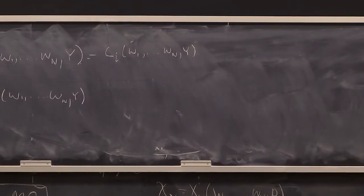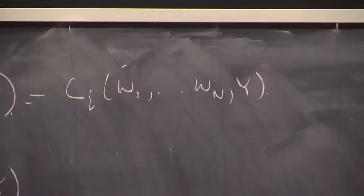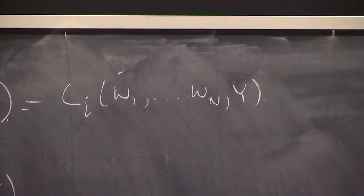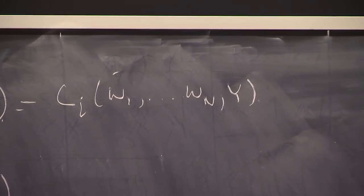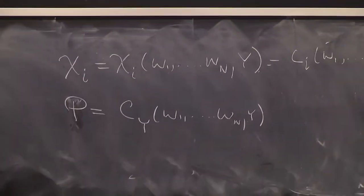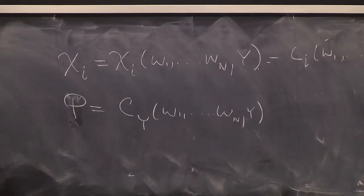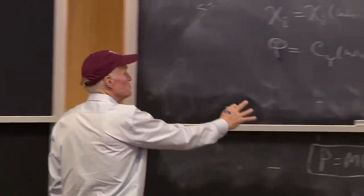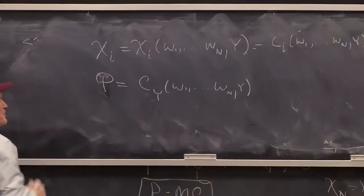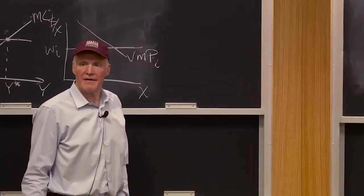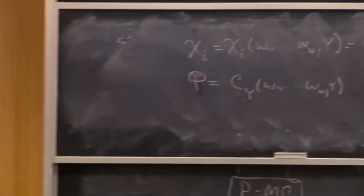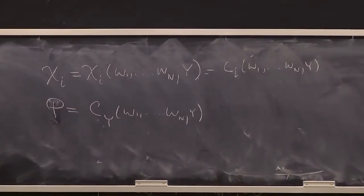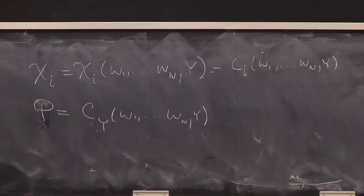So I guess this is how we're going to get the analog of the Slutsky equation. P should be P — sorry. P should be equal to that. Price equals marginal cost — that's the marginal cost condition. So, how are we going to get the analog to the Slutsky equation?